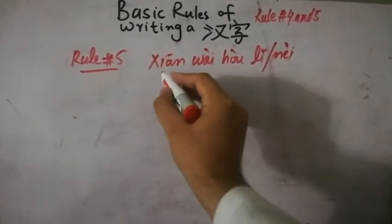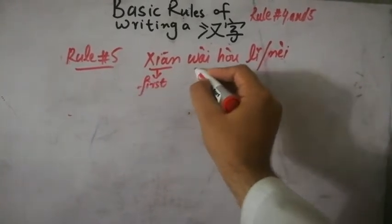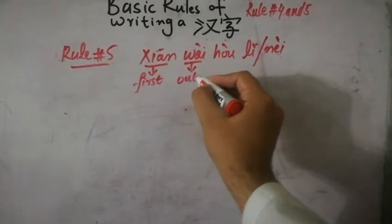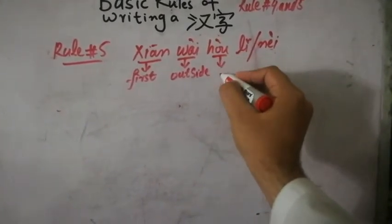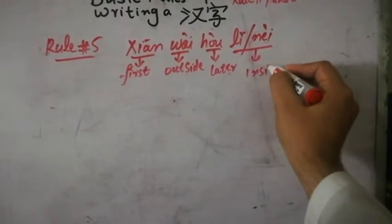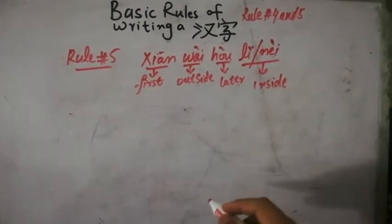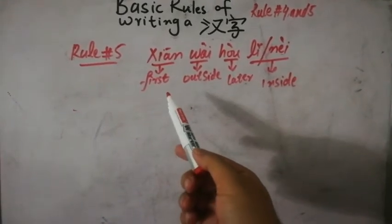So I will tell you what does it mean. Xiān means first, wài means outside, hòu means later, and lǐ or nèi means inside. So now you understood that if you write a Chinese character, maintain this order by writing the outside portion first and the inside portion later.